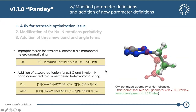Moving into the 1.1.0 release, our main goal was to fix some chemical perception problems we were aware of in 1.0.0. We did fix some problems by modifying some parameter definitions and by adding new parameter definitions. We have three major improvements in 1.1.0.